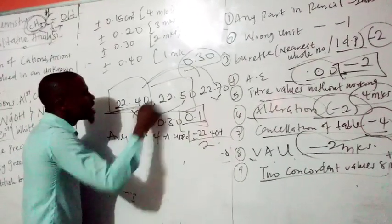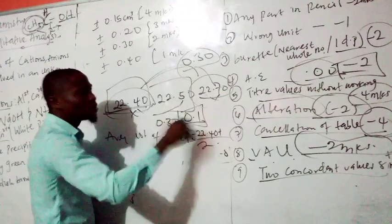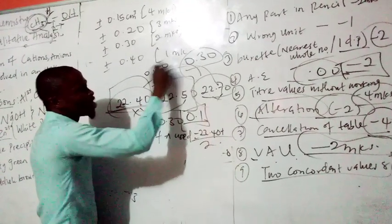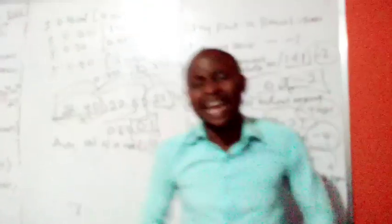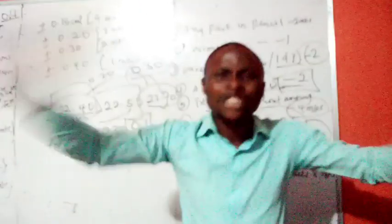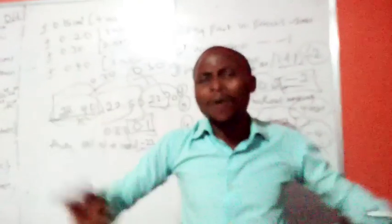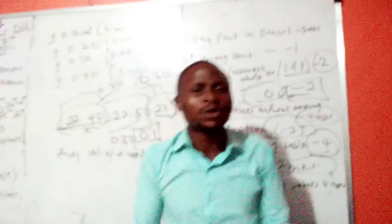If you are going to use two values, whereby the difference between one and the other is more than 0.20, you will lose, you may lose 8 marks just for that alone. Like I said earlier, quantitative analysis is the analysis that you can get your accurate marks. You can get your full marks. Otherwise, if you don't follow rules and regulations, you will be found wanting.